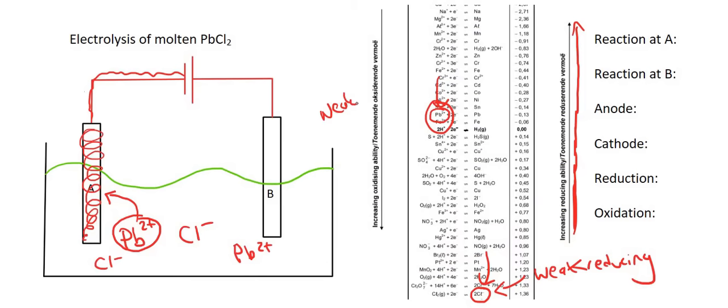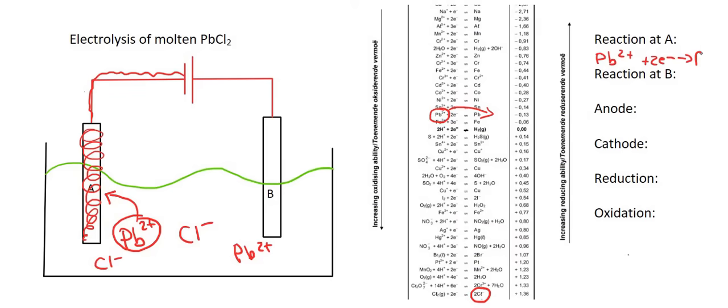And so under normal situations where we didn't have a battery, no reaction would be able to take place. But because of the battery, a reaction will take place. And so what happens is that this Pb2+ is going to move over to the right hand side, and so we're going to get that as a reaction at A, so Pb2+ plus two electrons gives us Pb.